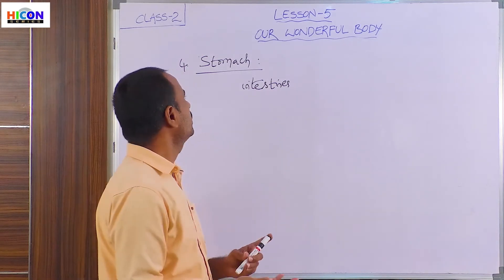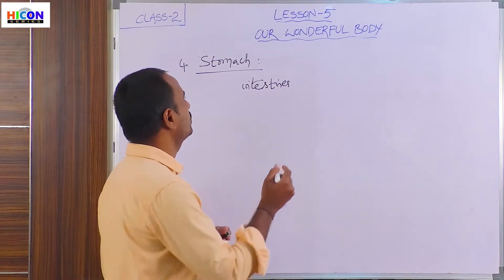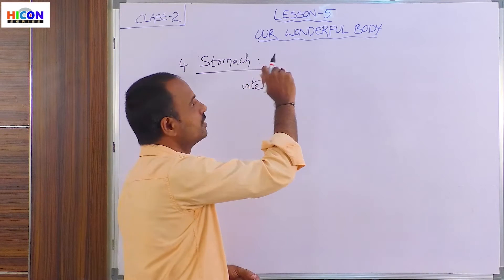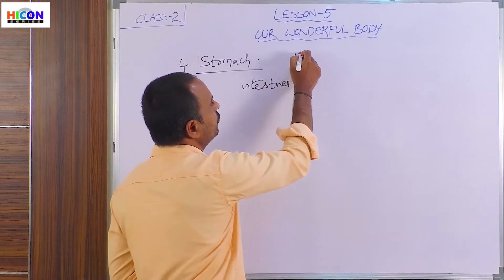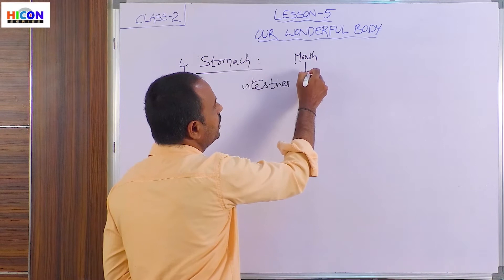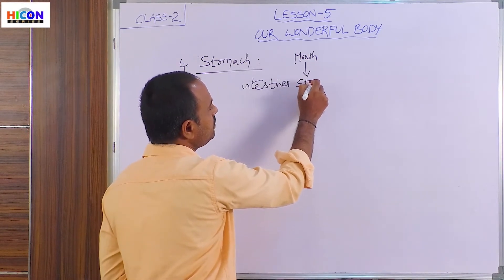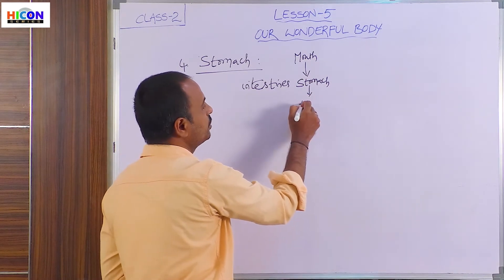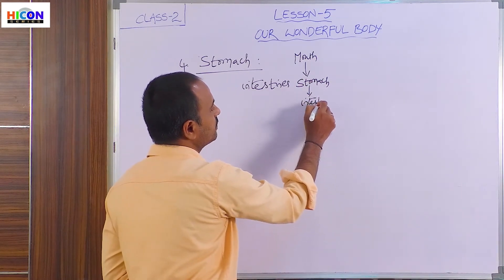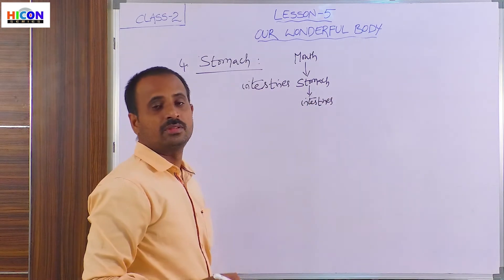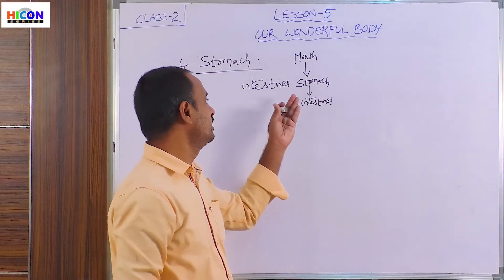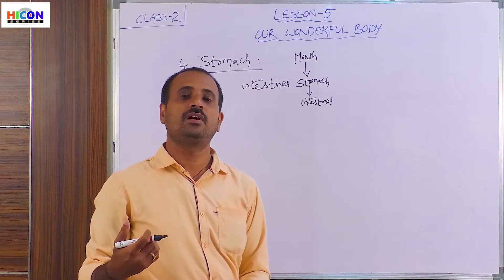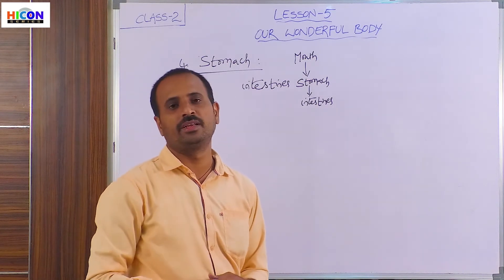What are the various parts in the stomach? Generally the stomach is part of the digestive system. First we eat food in the mouth, from the mouth the food goes into the stomach, and from the stomach the food goes into the intestines. The digested food is absorbed in the intestines, and the undigested food comes out of our body as waste material.